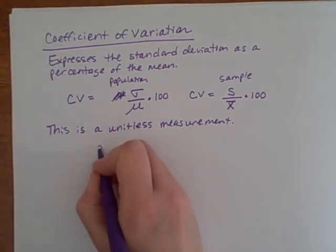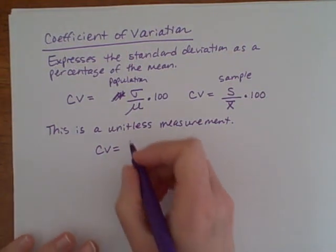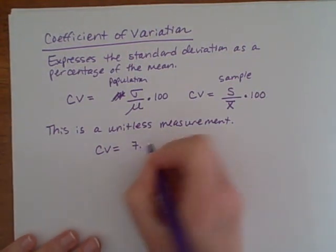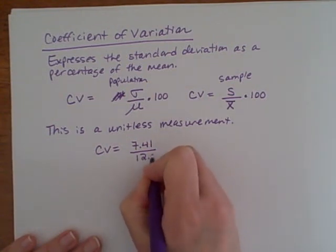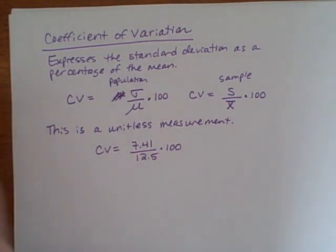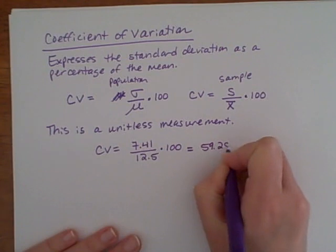Okay, the computation is very straightforward. If I'm looking at the coefficient of variation for our last set of data that we were using for our last example, our standard deviation was 7.41 and our mean was 12.5. And if I do the computation here, 7.41 divided by 12.5 times 100 tells me that the coefficient of variation here is 59.28 percent.